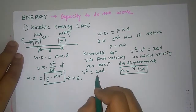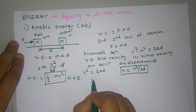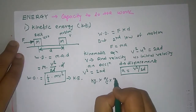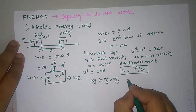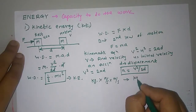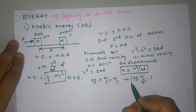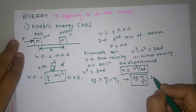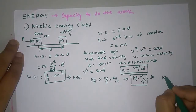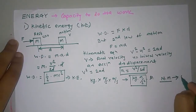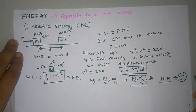Now considering the units: M is mass in kg, and V² is m/s times m/s. Rearranging gives kg·m/s², which is Newton, times meter. So the unit is Newton-meter, which we write as Joule. Joule is the unit of energy.